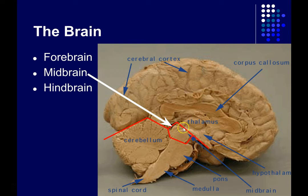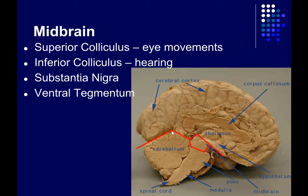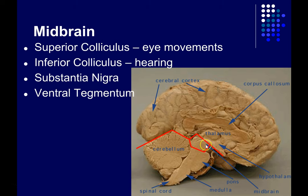Next is the midbrain, which is relatively much smaller. It includes the cerebral peduncle and the superior and inferior colliculus. The superior colliculus is important for generating certain kinds of eye movements. The inferior colliculus is part of the auditory pathway for processing sounds. Inside the cerebral peduncle is the substantia nigra, a part of the brain damaged in Parkinson's disease resulting in motor deficits, and also the ventral tegmentum, which is part of the reward pathway important for addiction.